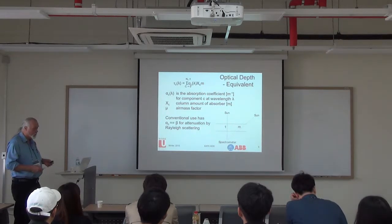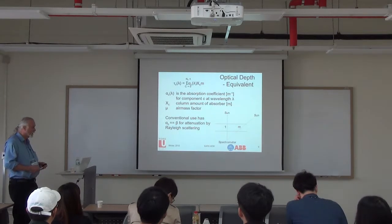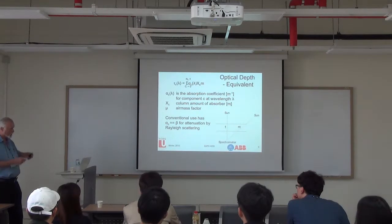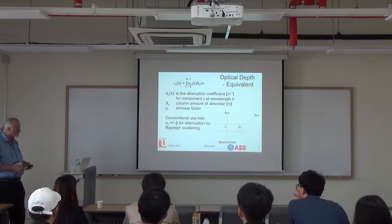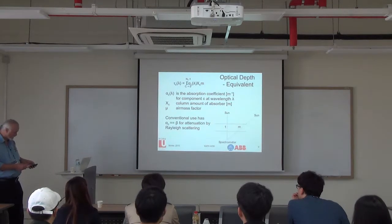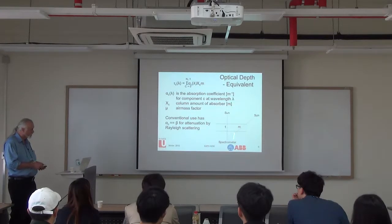For a spherical Earth at large solar zenith angles, you can use the approximate path through a curved atmosphere, go to the Chapman function, or use an actual numerical model that includes the vertical distribution of the gas through the entire atmosphere.